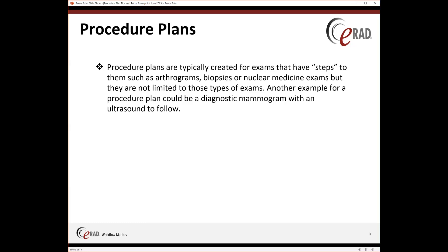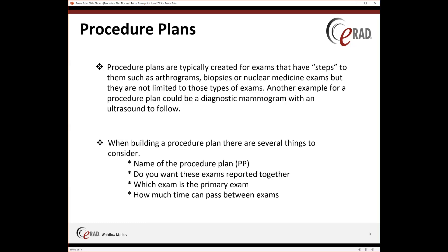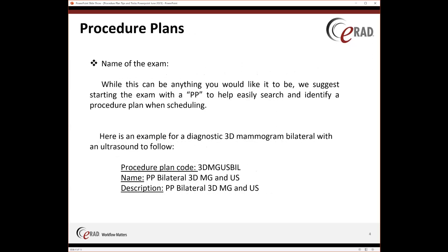When building a procedure plan, there are multiple things to consider: basically what you want to name it, do you want these exams reported together, which exam is going to be your primary exam, and how much time do you want between these exams — which can be pretty important if you are using contrast. For naming, it can be anything you would like, but we highly suggest using a 'PP,' which stands for procedure plan, in front of the name. This helps your schedulers easily identify that it's a procedure plan.